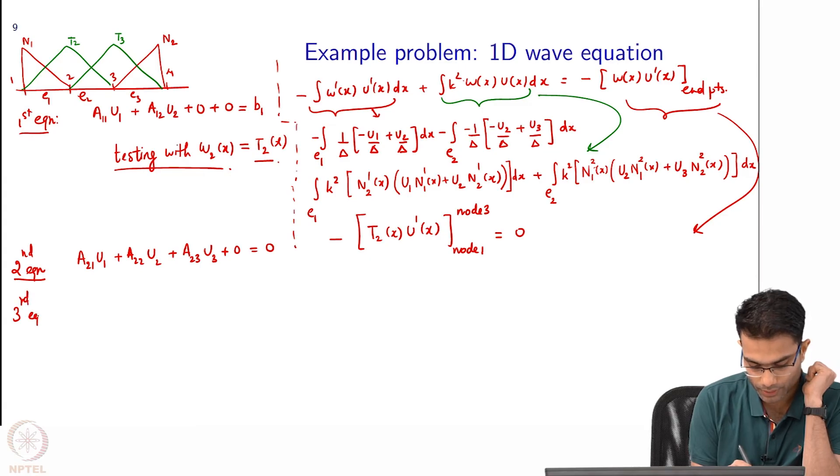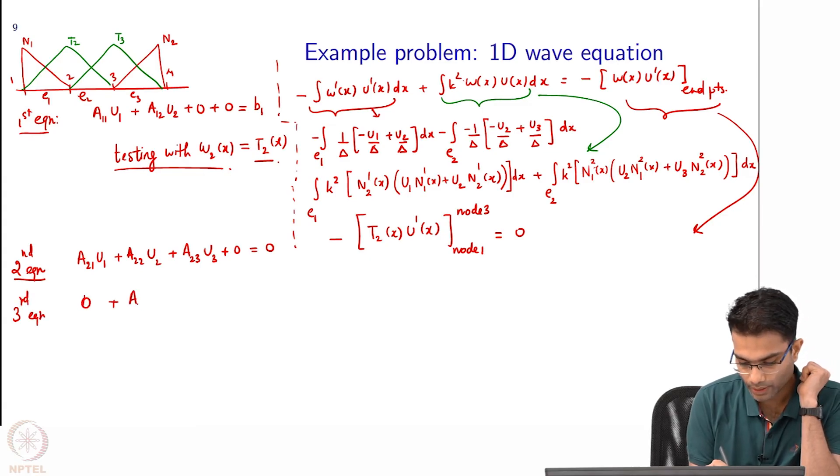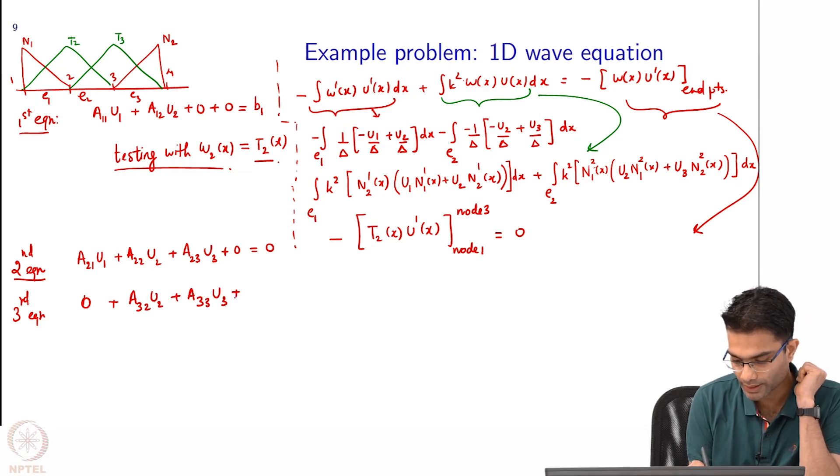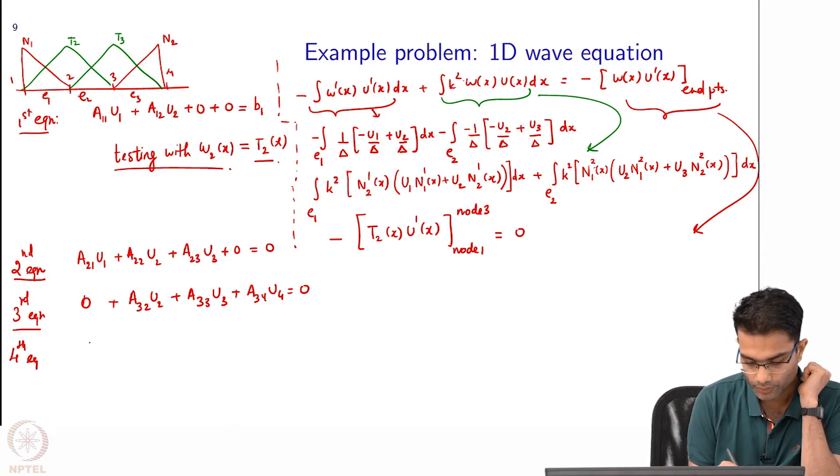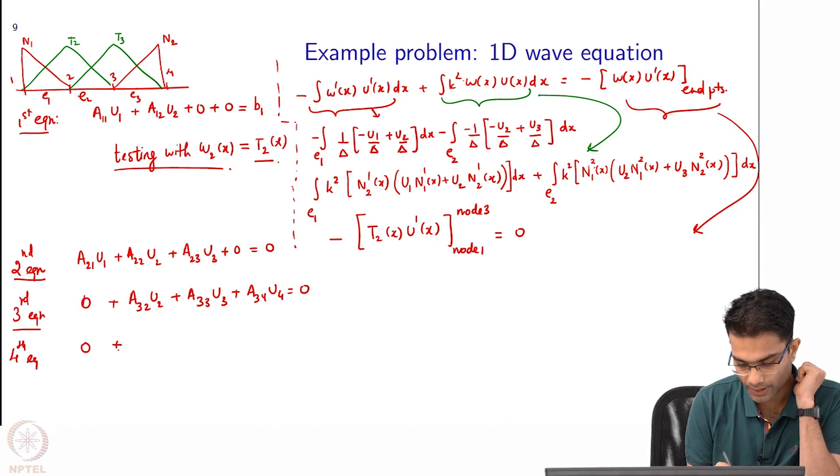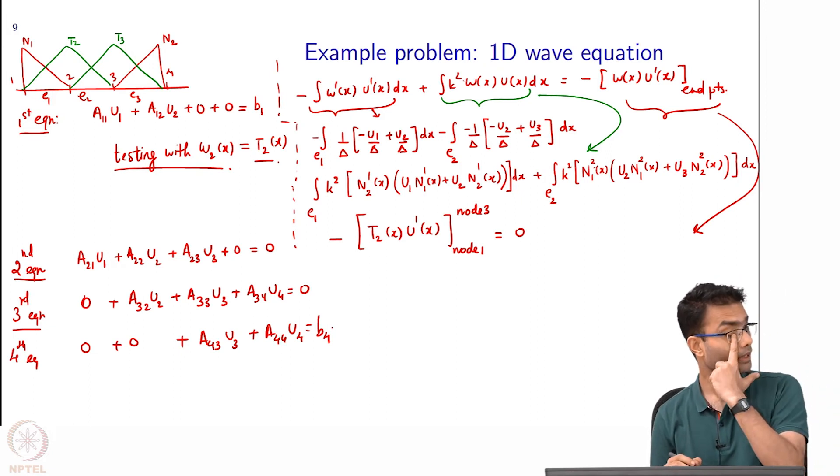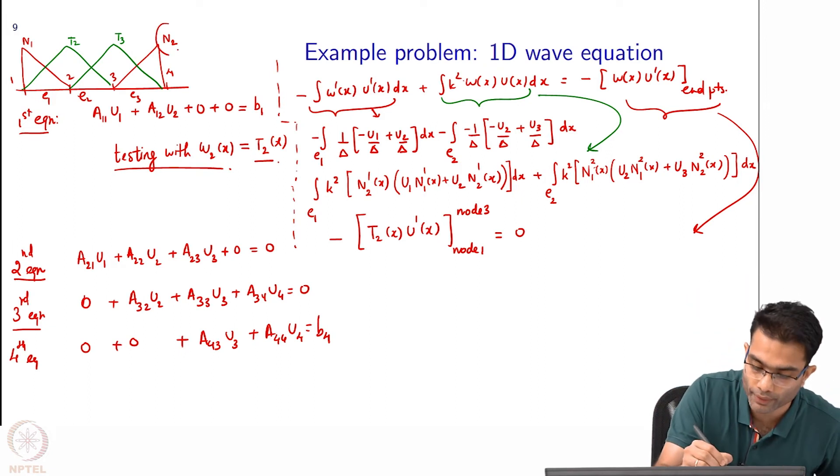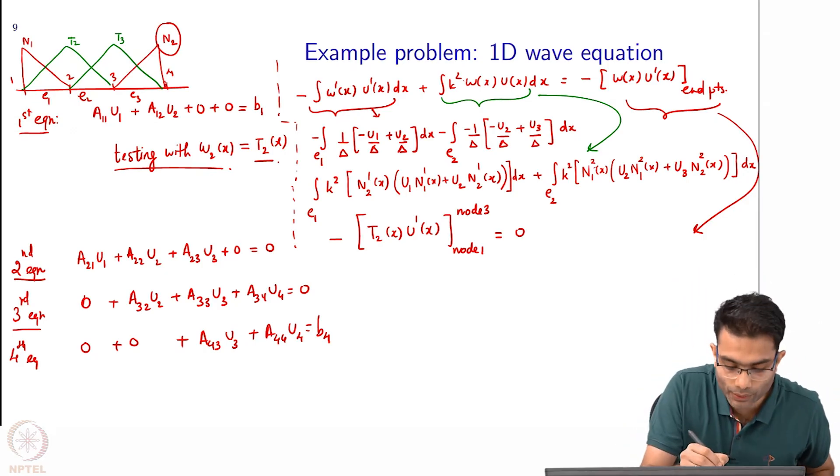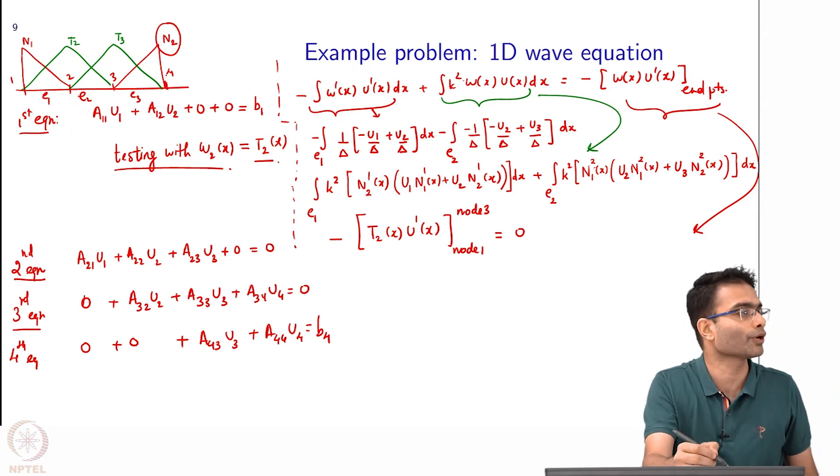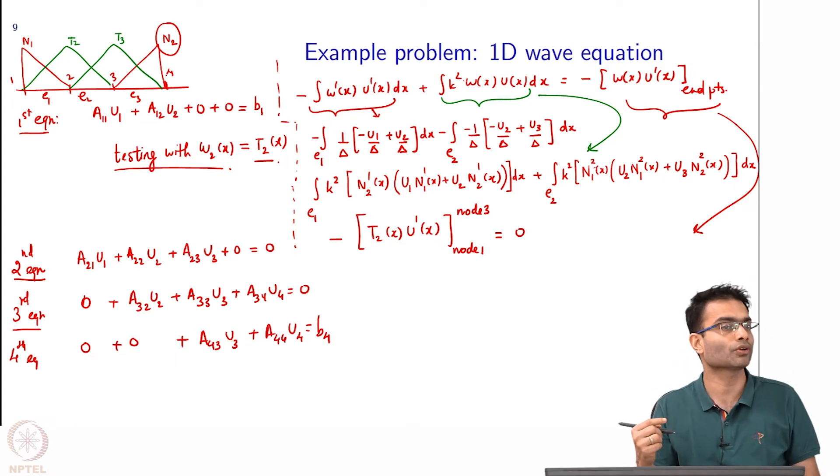Exactly, now let us see the pattern. Third equation will be 0 plus a32 u2 plus a33 u3 plus a34 u4 is equal to 0. And fourth equation will give me 0 plus 0 plus a43 u3 plus a44 u4 is equal to 0. Now the right hand side when I choose my n2 over here in the final equation its value at the end point node is 1. That is why I get a non-zero contribution over here.